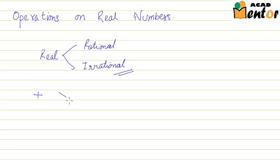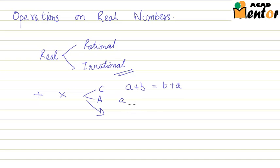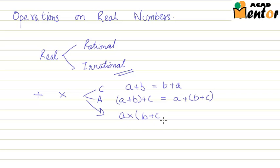The addition and multiplication operations on rational numbers always follow the commutative, associative, and distributive properties. The commutative property means a plus b is always equal to b plus a. The associative property says that a plus b plus c is equal to a plus (b plus c). The distributive law says multiplication is always distributed over addition, meaning a multiplied by (b plus c) gives ab plus bc.